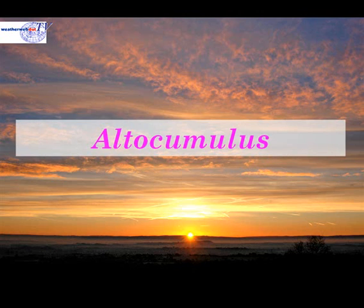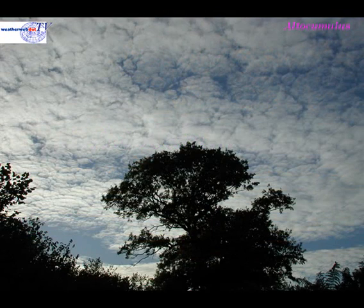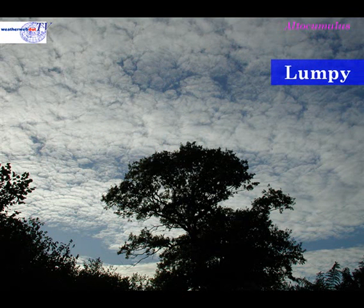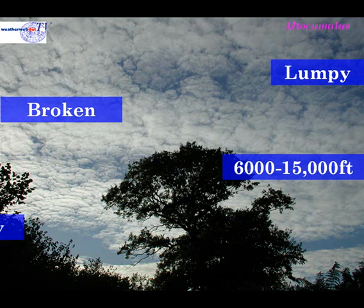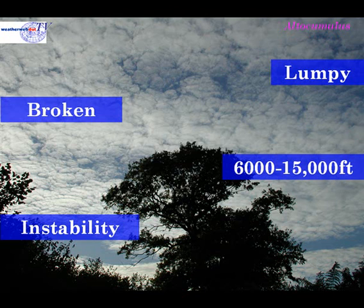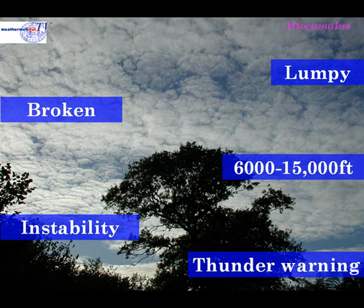Now we'll investigate alto cumulus cloud. This cloud again occurs at medium levels in the atmosphere, but alto cumulus, instead of being flat and featureless as in alto stratus, is quite lumpy in nature. Generally alto cumulus is a broken cloud, occurring between 6 and 15,000 feet. Because of its convective nature it's associated with instability in the medium levels of the atmosphere, meaning there is the potential for showers to be forming. Alto cumulus can also warn of thunderstorms developing.